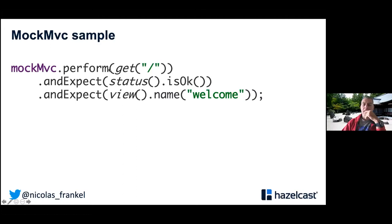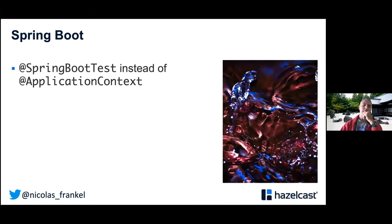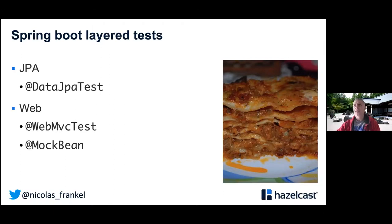With MockMVC you can perform a GET at the root and expect HTTP status 200 and a return view name of 'welcome'. You can also check items in your model. If you are using Spring Boot, there's an @AutoConfigureMockMvc annotation — inject a MockMvc object and you don't need to care further about it. Spring Boot also has @SpringBootTest instead of @ContextConfiguration, plus a couple of what they call layer tests. I prefer to test slices, but layer tests are available if needed.